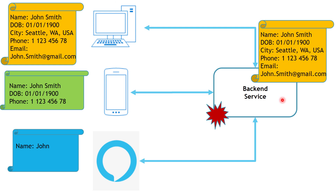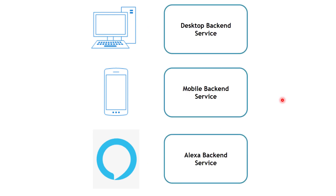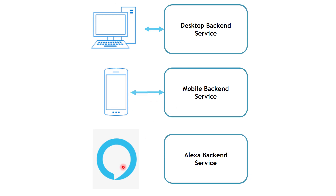Now let's see how we can resolve this challenge. We are going to slice the general backend service into multiple services: a Desktop backend service, a Mobile backend service, and an Alexa backend service. Then we are going to connect the desktop frontend with the desktop backend service, the mobile frontend with the mobile backend service, and the Alexa frontend with the Alexa backend service.